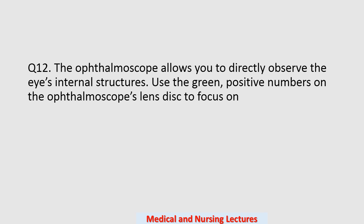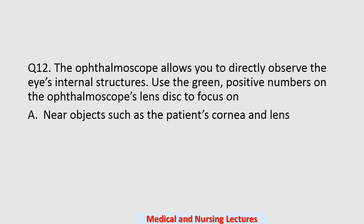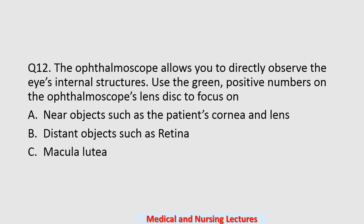Question number twelve: the ophthalmoscope allows you to directly observe the eye's internal structures. Use the green positive numbers on the ophthalmoscope lens disc to focus on — Option A: near objects such as the patient's cornea and lens. Option B: distant objects such as the retina. Option C: macula lutea. Option D: sclera. The correct option is option A.